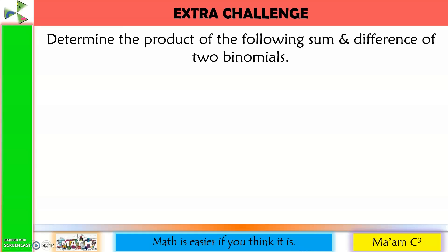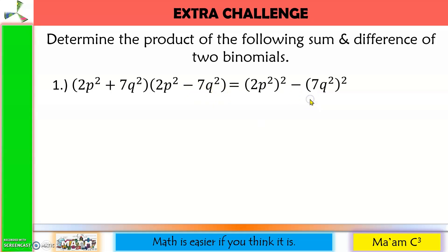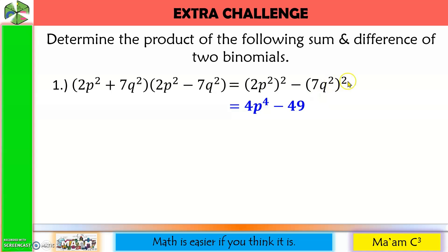Let us do an extra challenge. Determine the product of the following sum and difference of two binomials. Number one: our first term here is 2p squared, so we square 2p squared, and then always negative. Our second term is 7q squared, so 7q squared is squared. 2 squared is 4; p squared squared — we multiply the exponents, 2 times 2 is 4, so we have p to the 4th. Copy minus. 7 squared is 49; q squared squared — 2 times 2 is 4, so we have q to the 4th.